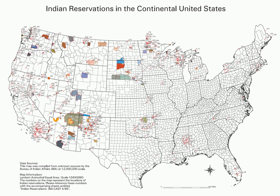An Indian reservation is a legal designation for an area of land managed by a federally recognized Native American tribe under the U.S. Bureau of Indian Affairs rather than the state governments in which they are physically located. Each of the 326 Indian reservations in the United States is associated with a particular Native American nation. Not all of the country's 567 recognized tribes have a reservation. Some tribes have more than one reservation, while some share reservations.